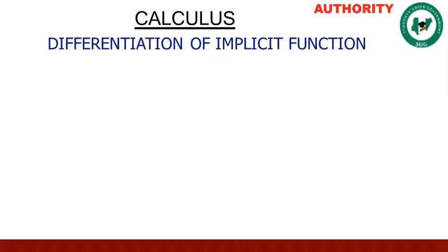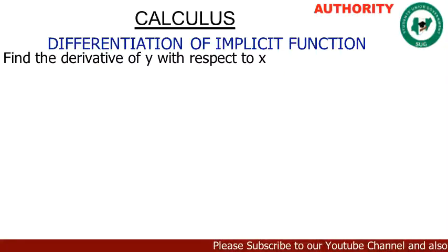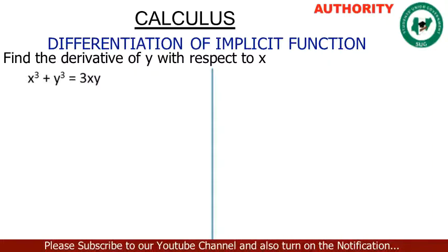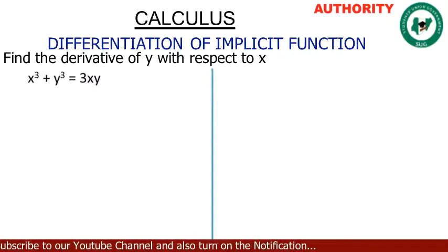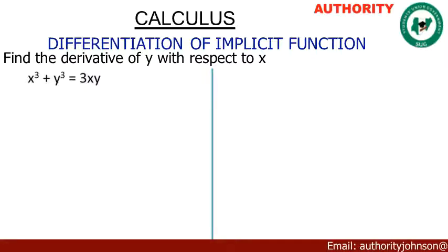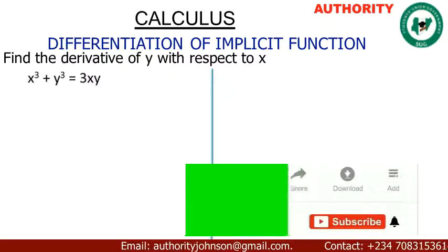Welcome. Today let's talk about differentiation of implicit functions. Let's take this question: find the derivative of the function x cubed plus y cubed equals 3xy. This is an implicit function — one that involves several variables. Unlike functions in x only, this one involves both x and y. We are going to differentiate this function with respect to x.